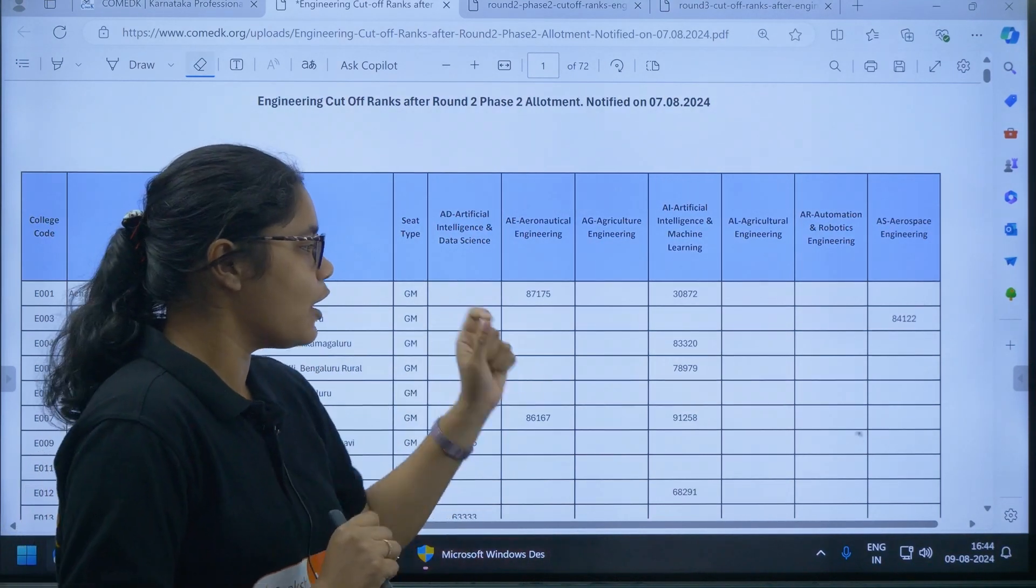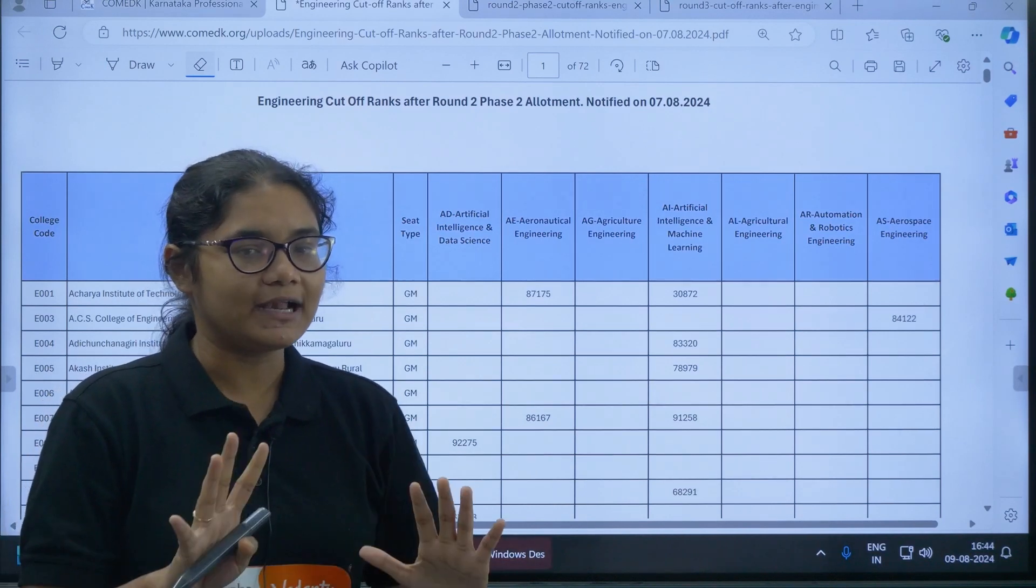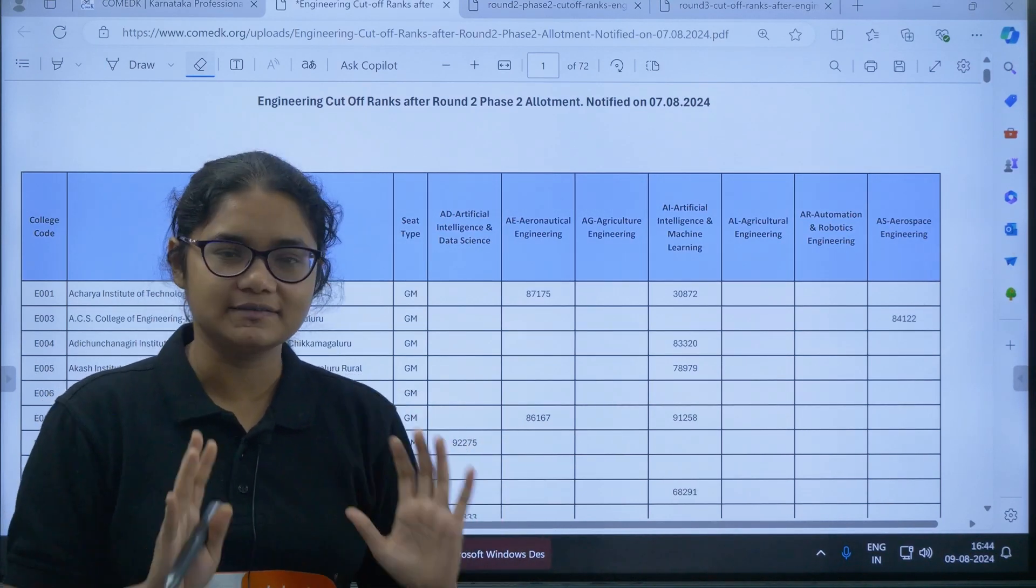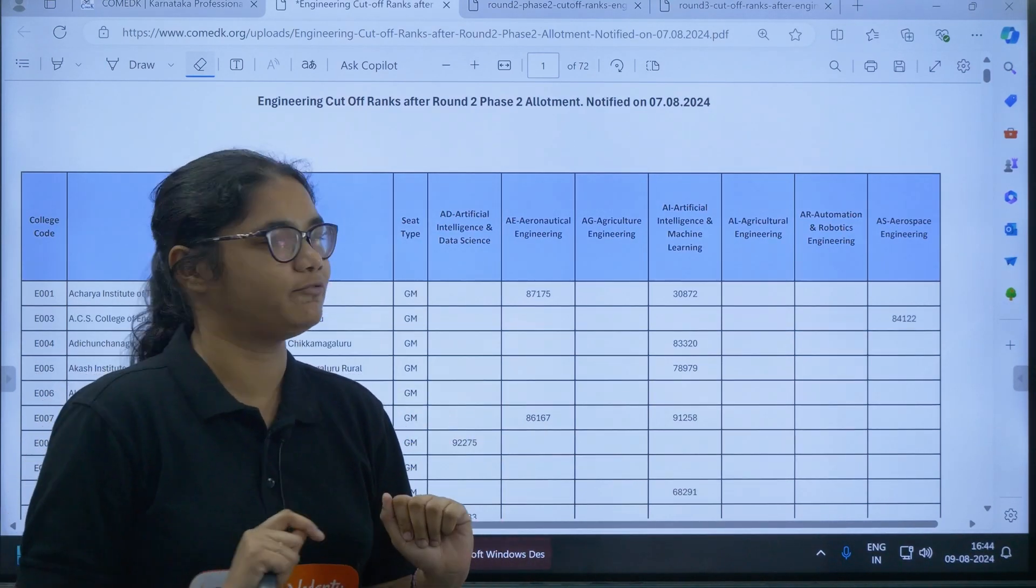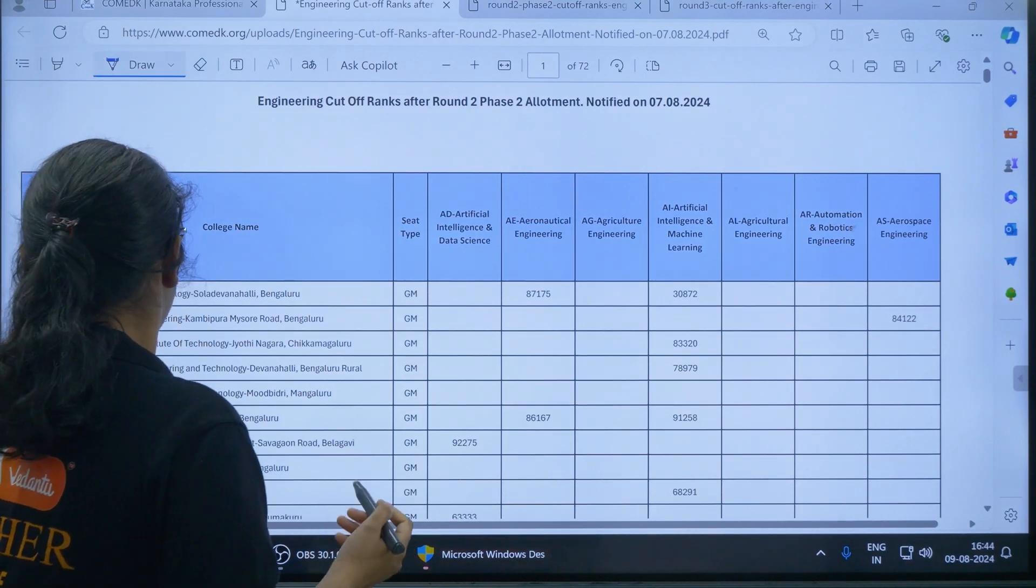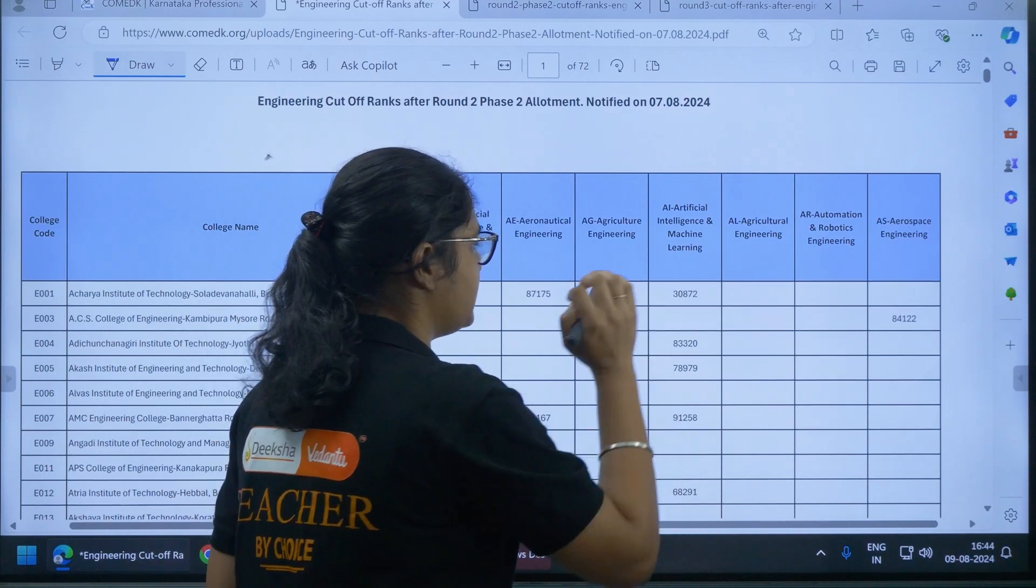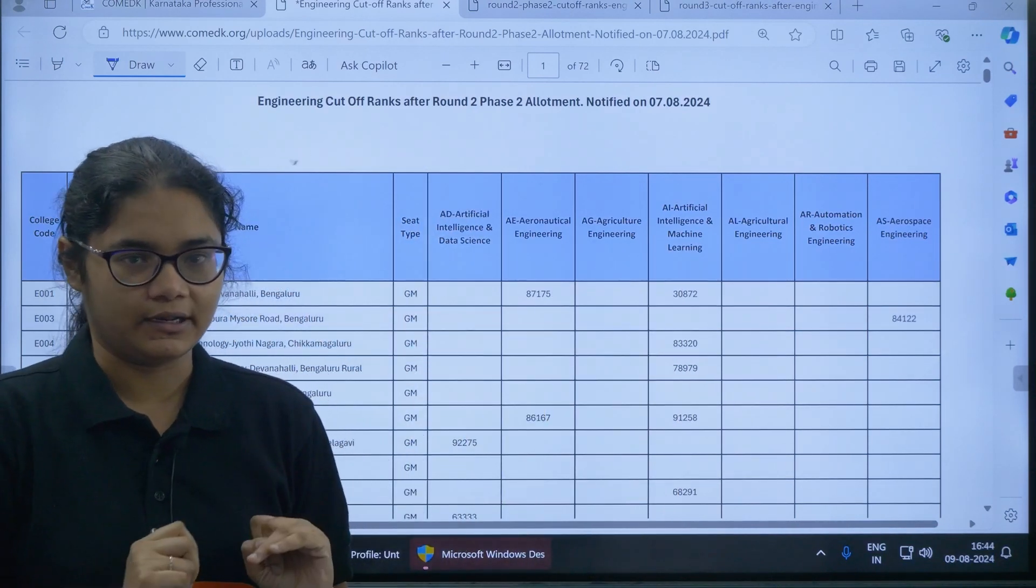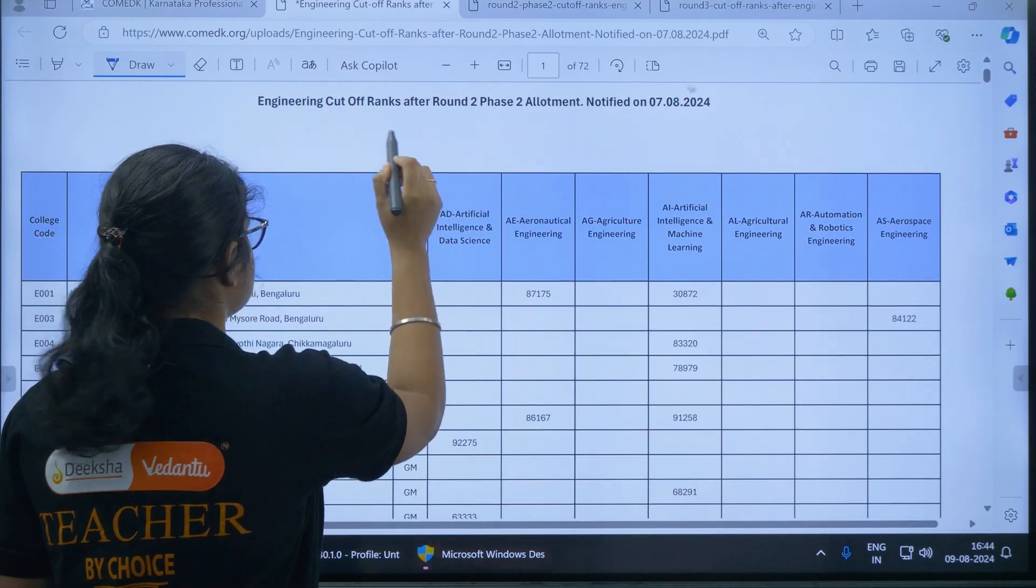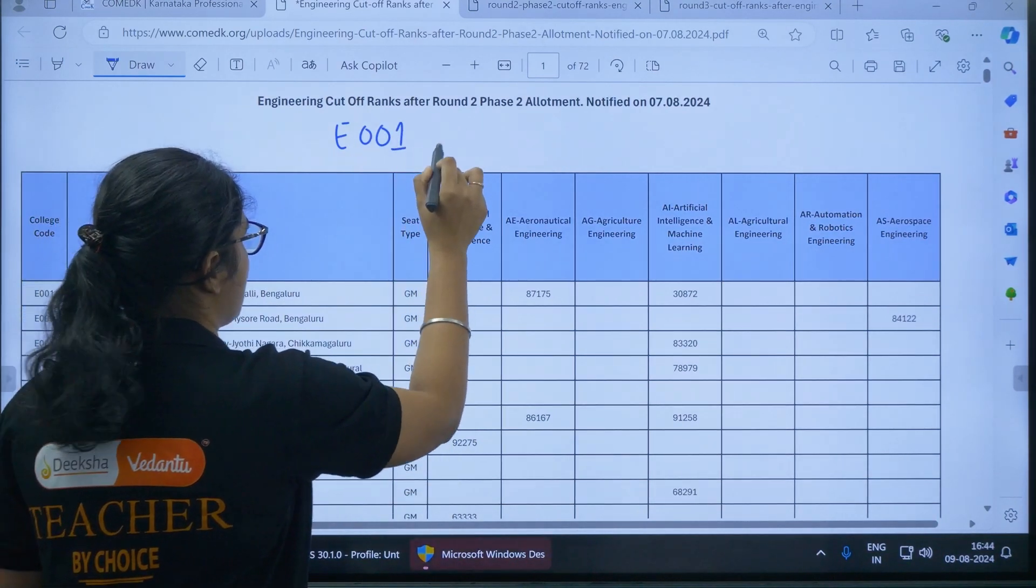Part 2 of this video is how you have to utilize this resource to take the correct decision. I will explain this taking a very simple example so that it is clear to all of you. For example, one of your choices is Acharya Institute of Technology and you want to take admission in Artificial Intelligence and Machine Learning. So let's say college E001, Acharya Institute.